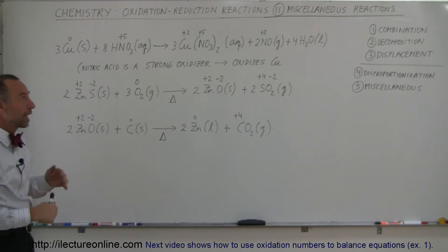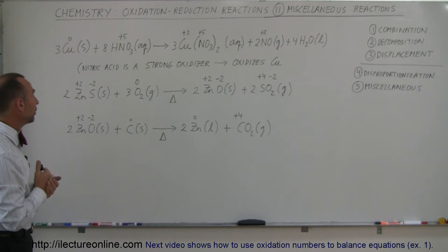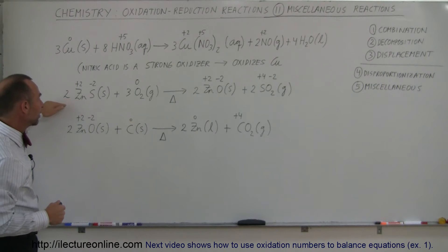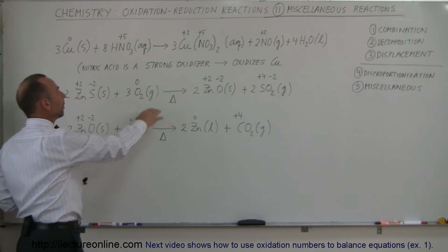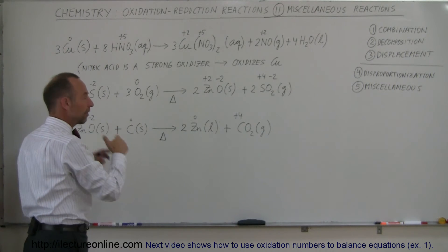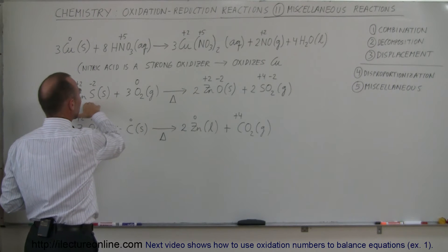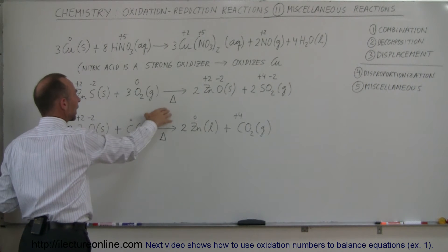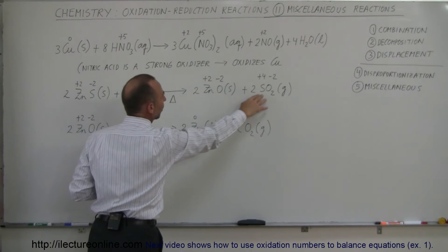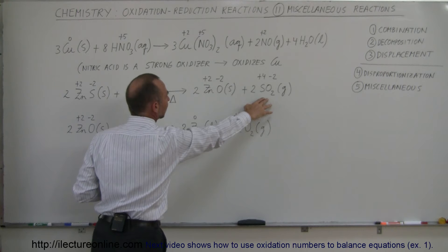Here we have another example where we're taking zinc sulfide, which is an ore of zinc. We heat it up with an excess of oxygen gas—we pump in a lot of oxygen gas into a container with zinc sulfide with a lot of heat. We remove the sulfur that way, turn it into sulfur dioxide gas, and end up with zinc oxide.